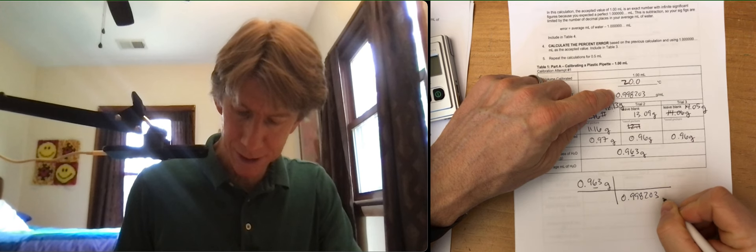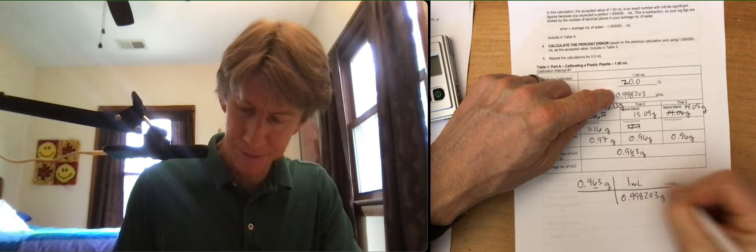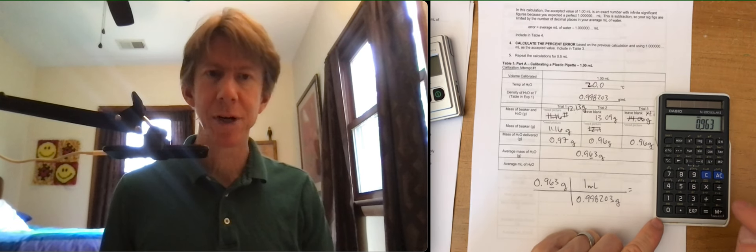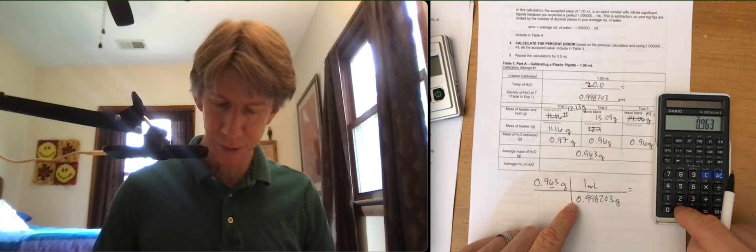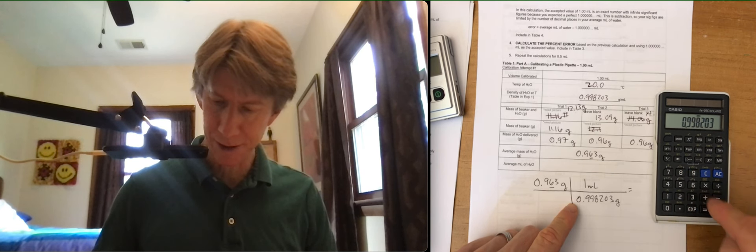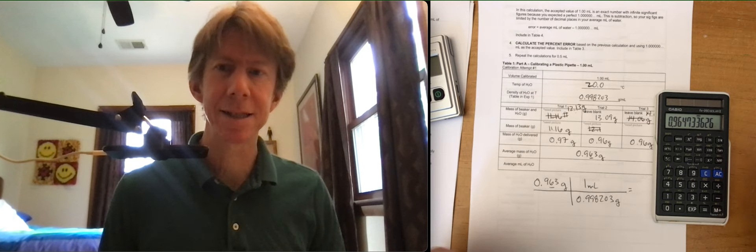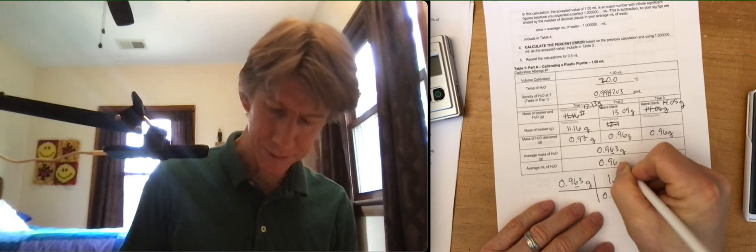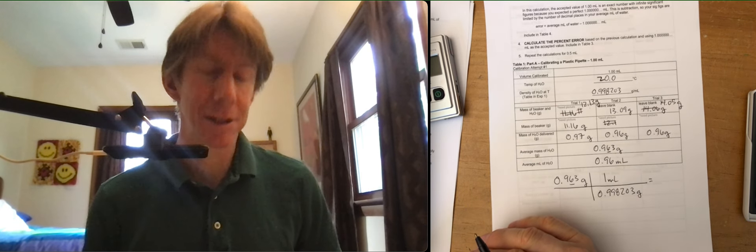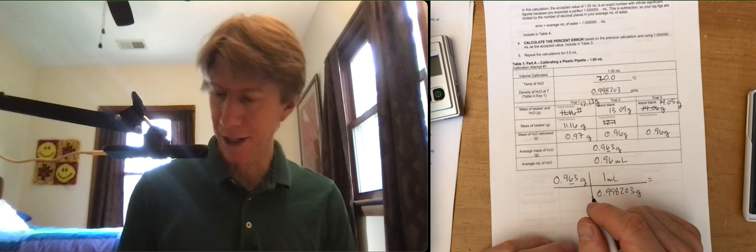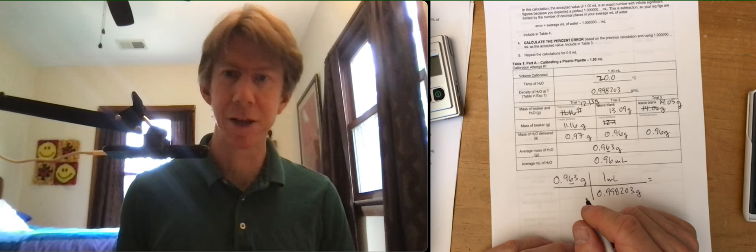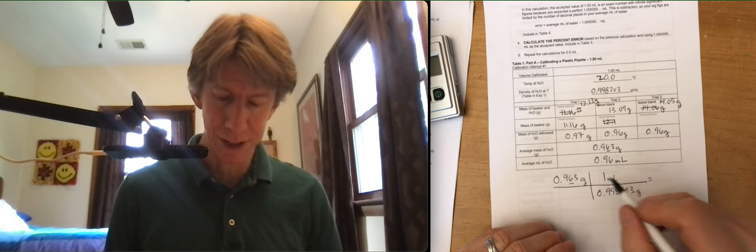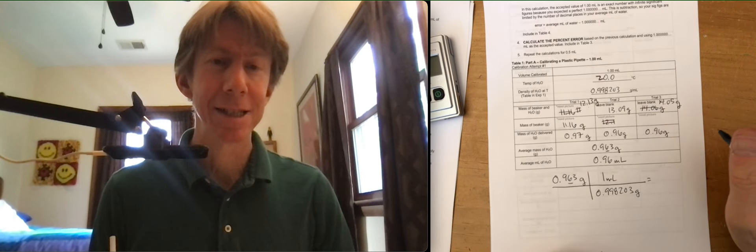I have my density, which is in grams per milliliter. 0.998203 grams per one milliliter. And now I can multiply this out. 0.963 divided by 0.998203. It's still 0.96 milliliters. To two decimal places. I guess I could put 0.965, since the third digit rounds to a 5. But I usually just write the two digits, so 0.96 milliliters.